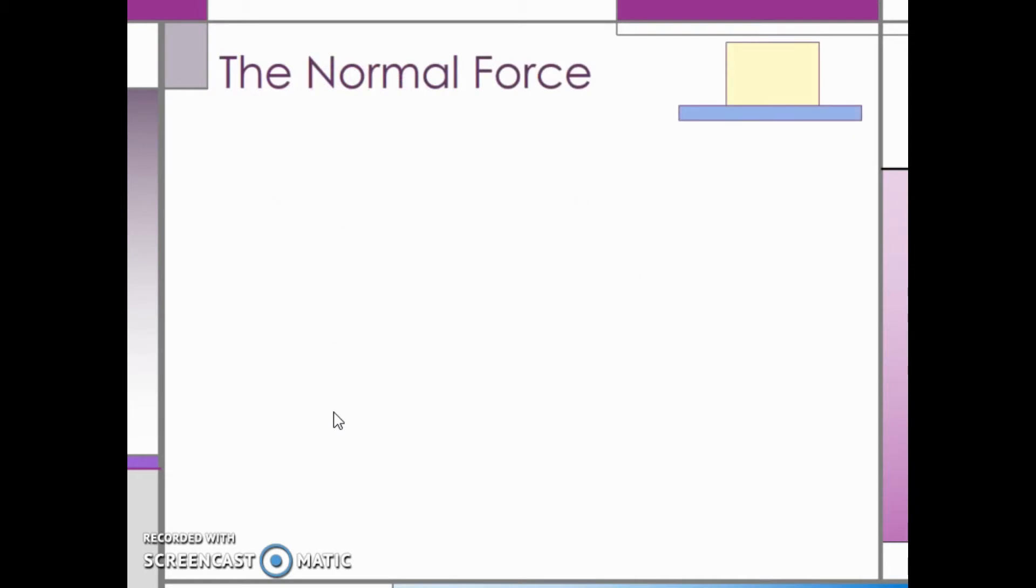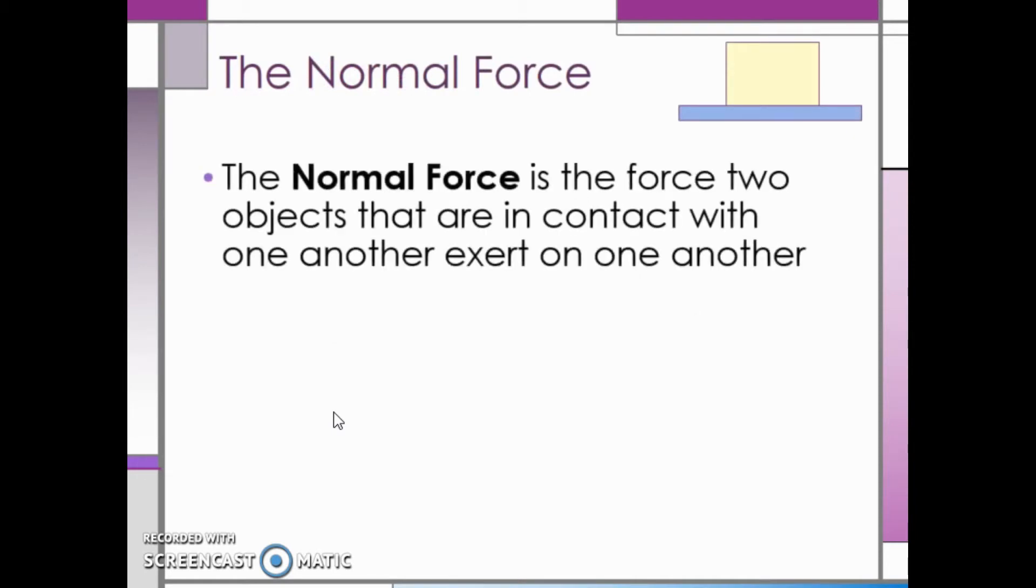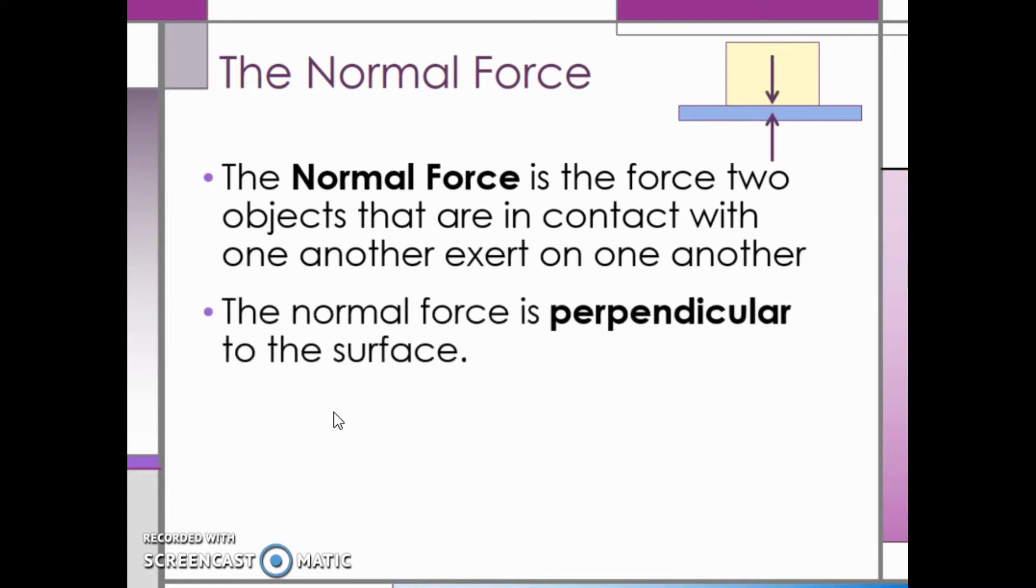Another force we need to talk about is the normal force. The normal force is the force two objects that are in contact with one another exert on one another. The normal force is perpendicular to the surface. The normal force will make more sense once we talk about Newton's third law of motion in the next section. In the picture here, we see an arrow pointing down and an arrow pointing up. The arrow pointing down represents the force of gravity acting on the box. The force pointing up is the normal force from the box being in contact with the floor. Without the normal force acting in the opposite direction as the force of gravity or the weight force, the box would fall through the floor.